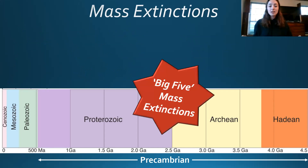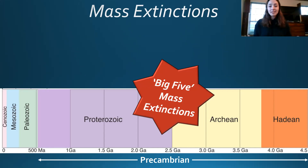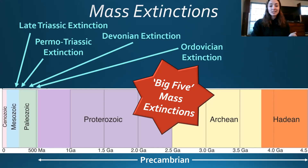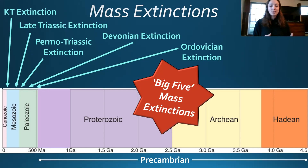This timeline of Earth's history at the bottom shows from the beginning of Earth's history at 4.5 billion years ago in the Hadean to the Cenozoic at zero million years ago. The Big Five mass extinctions are located in the Ordovician, the Devonian, the Permo-Triassic boundary, the Late Triassic period, and the Cretaceous-Tertiary boundary — all clustered in the Phanerozoic, which includes the Paleozoic, Mesozoic, and Cenozoic eras. The reason is simply that there wasn't much life before that — basically only bacterial species that are hard to trace in the fossil record.